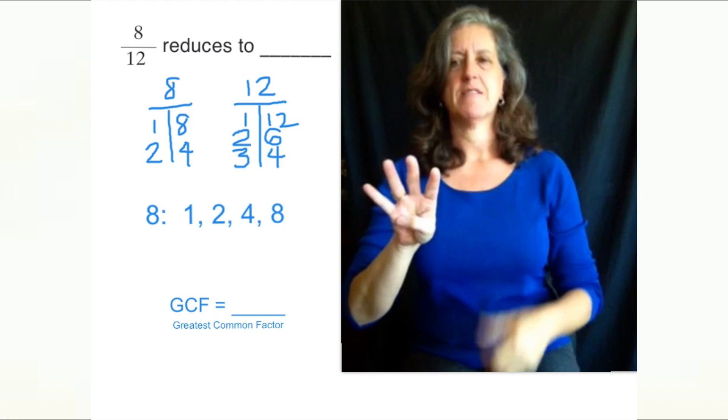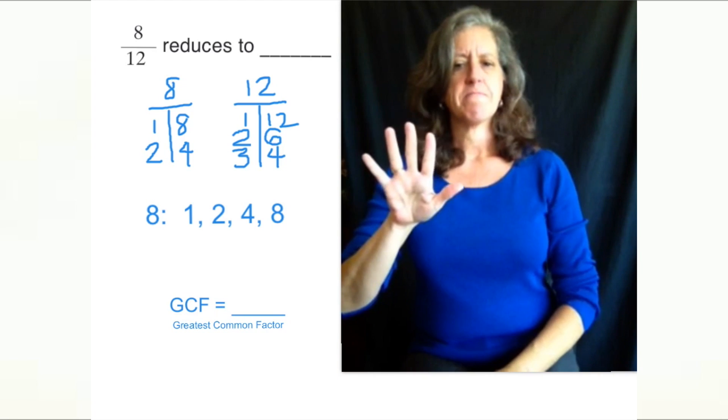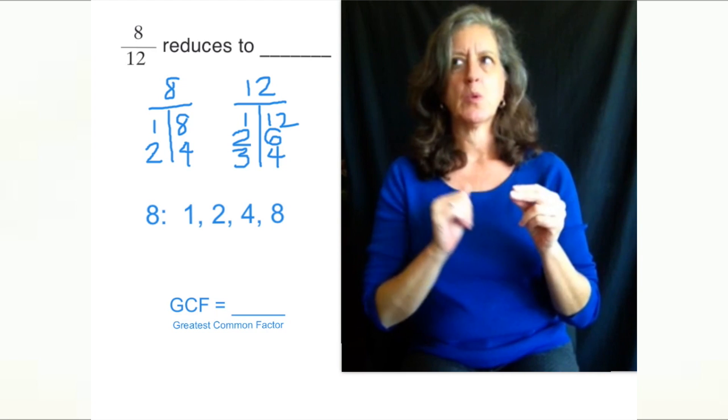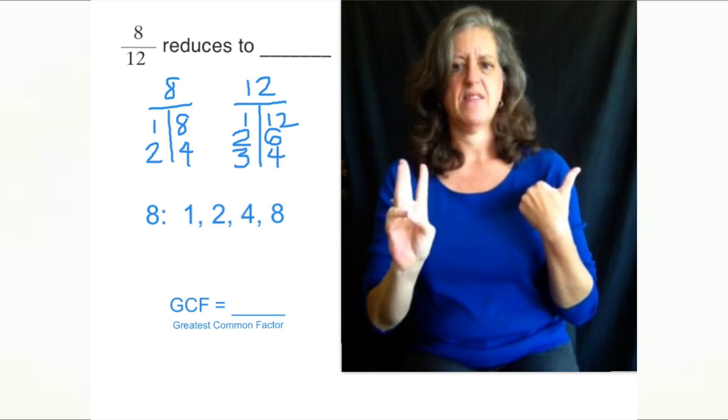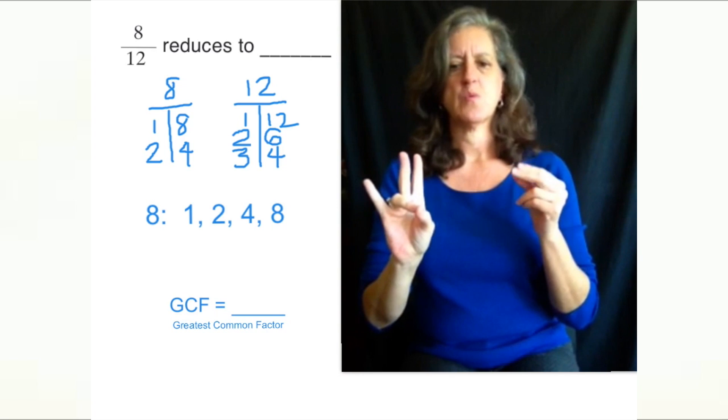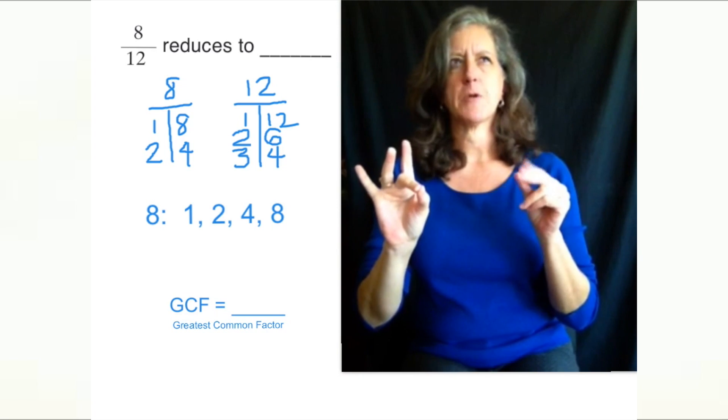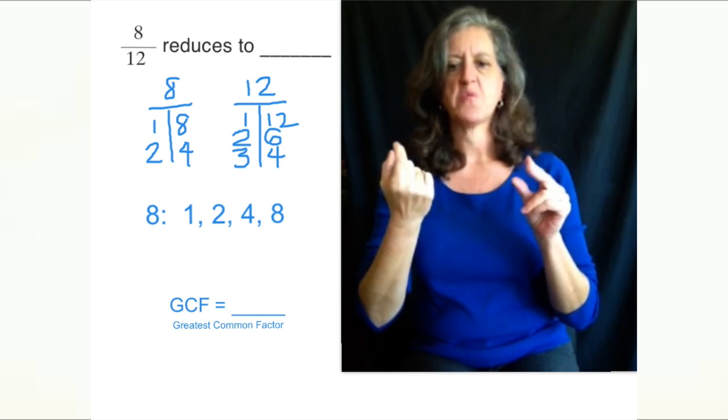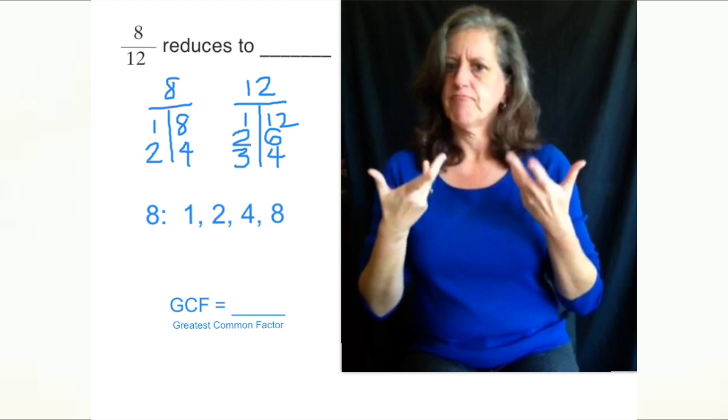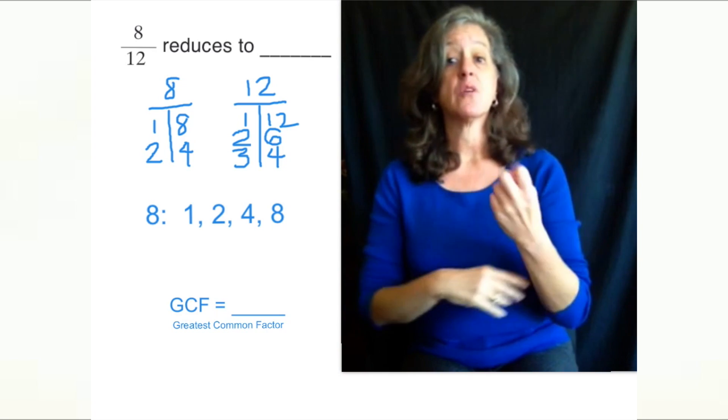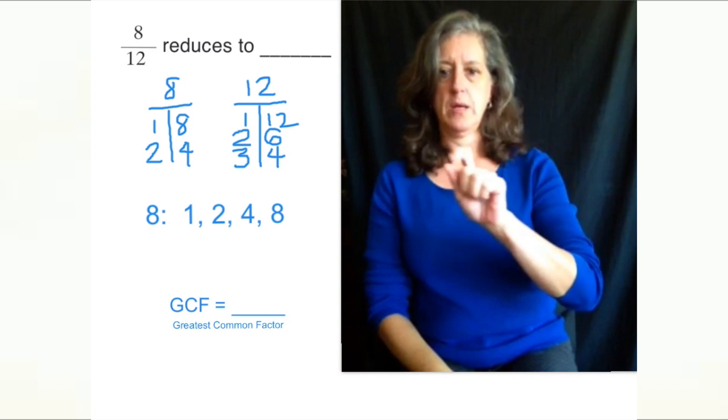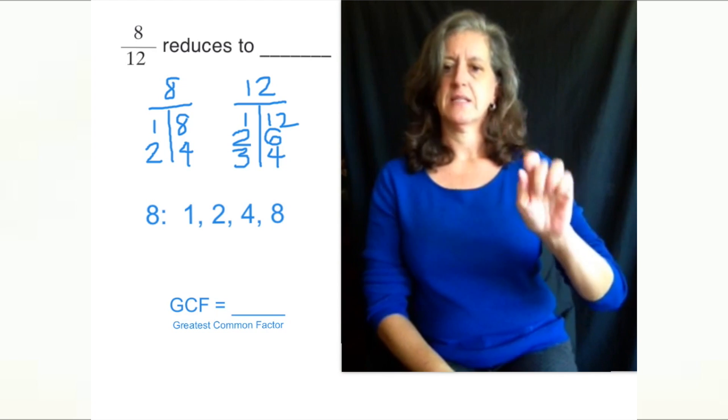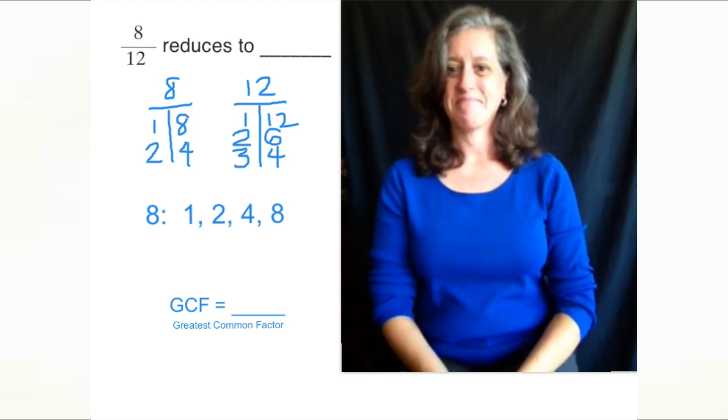Four we already have. Five times something equals 12? No. Six we already have. Seven, 8, 9, 10, 11? No. And 12 we already have, so we're done. So the factors of 12 are 1, 2, 3, 4, 6, and 12.